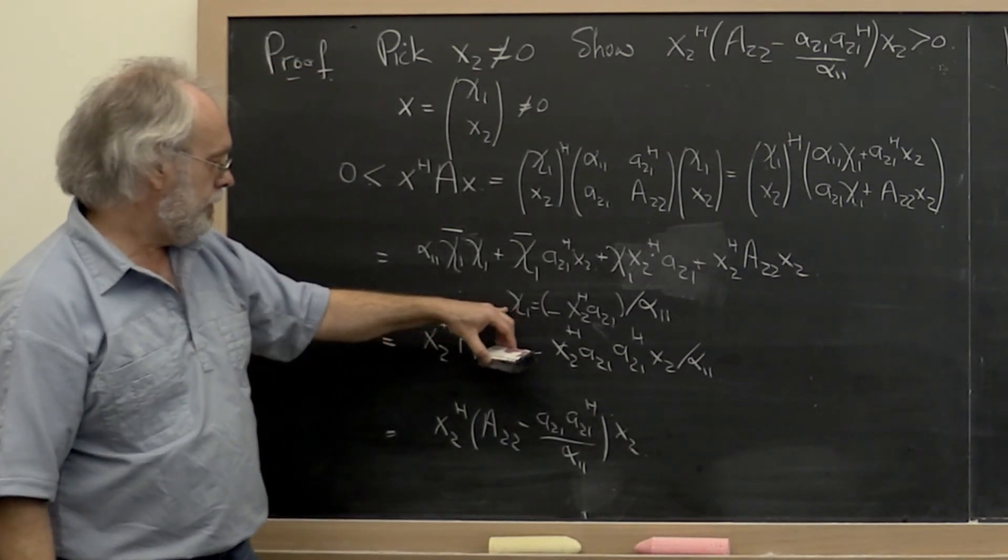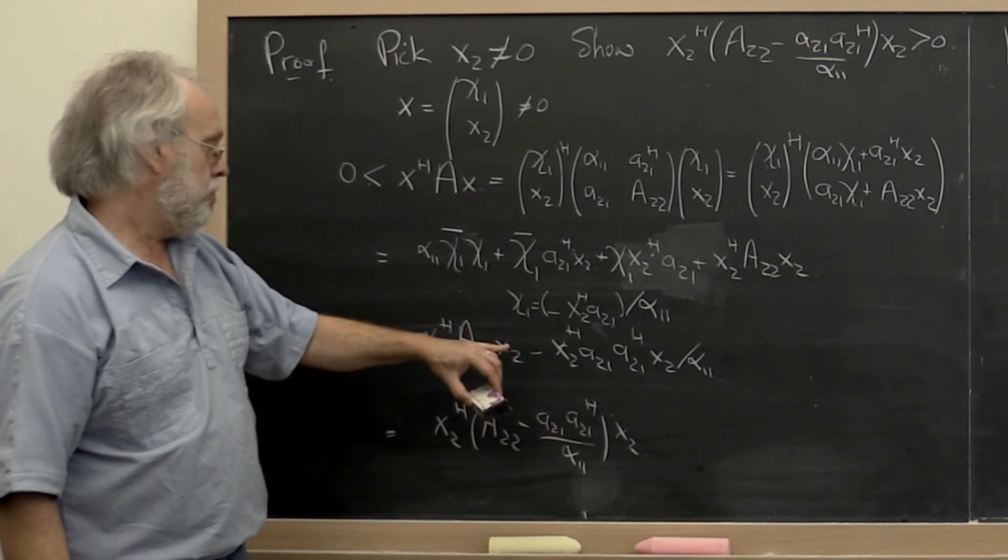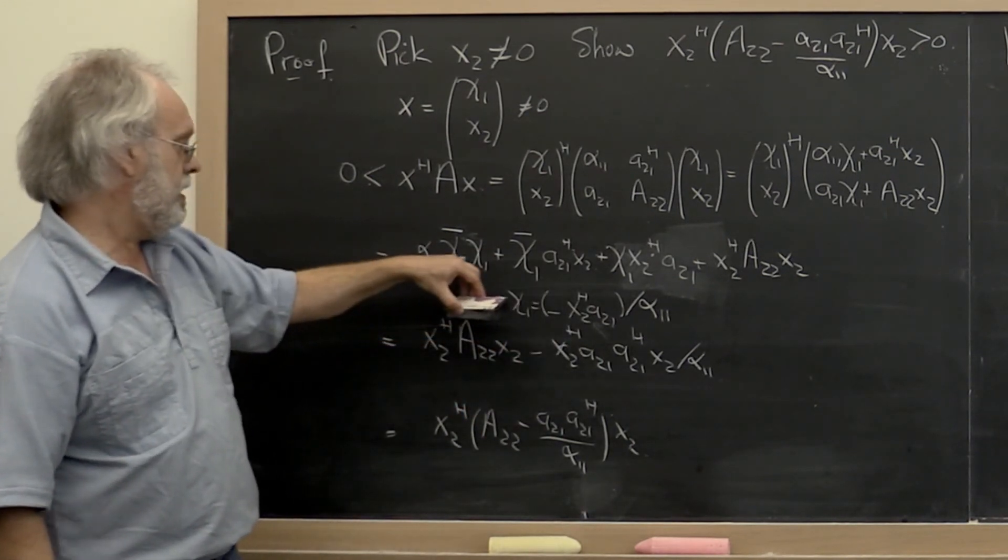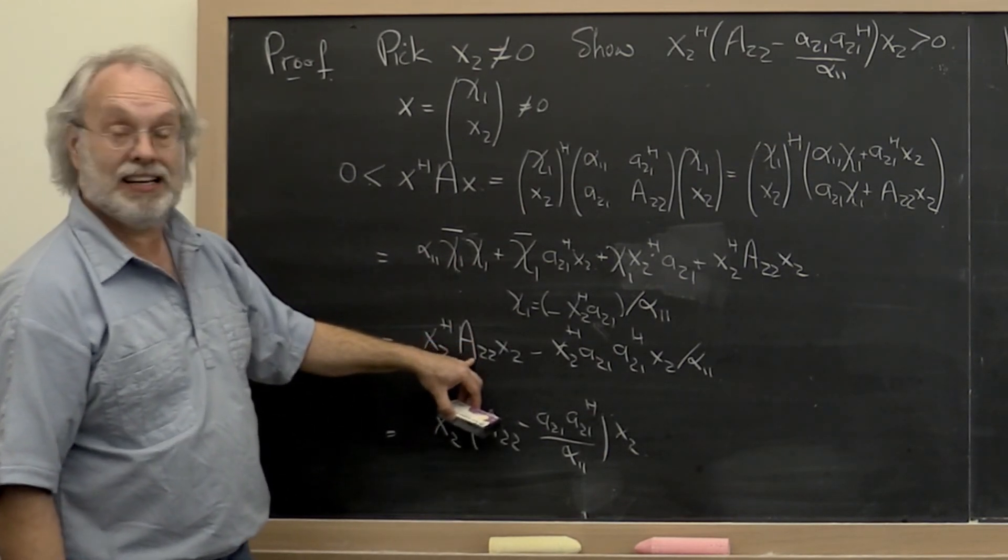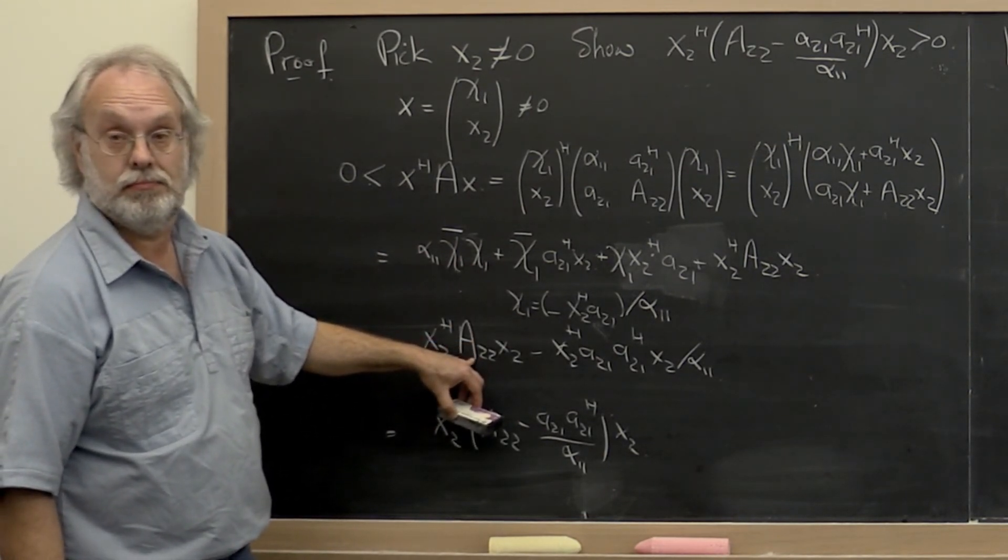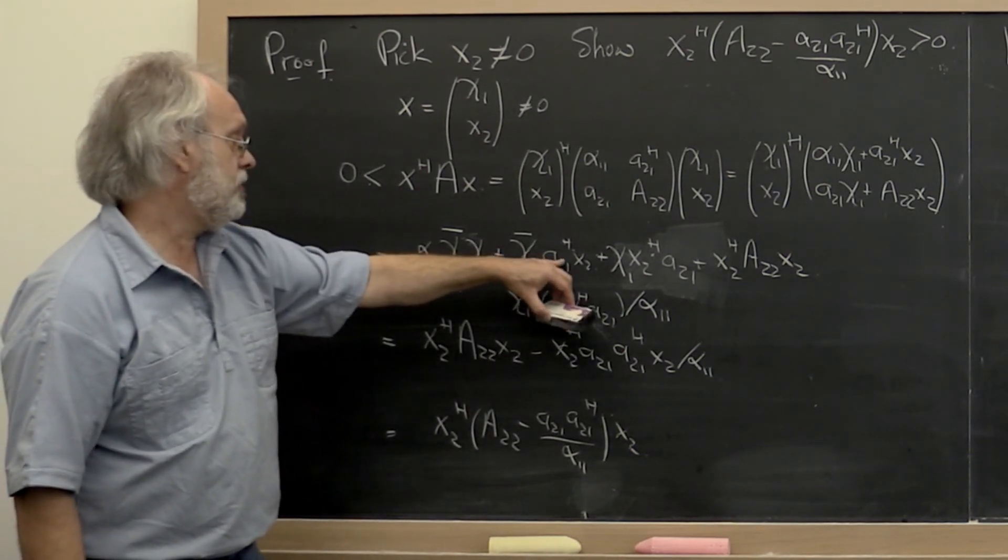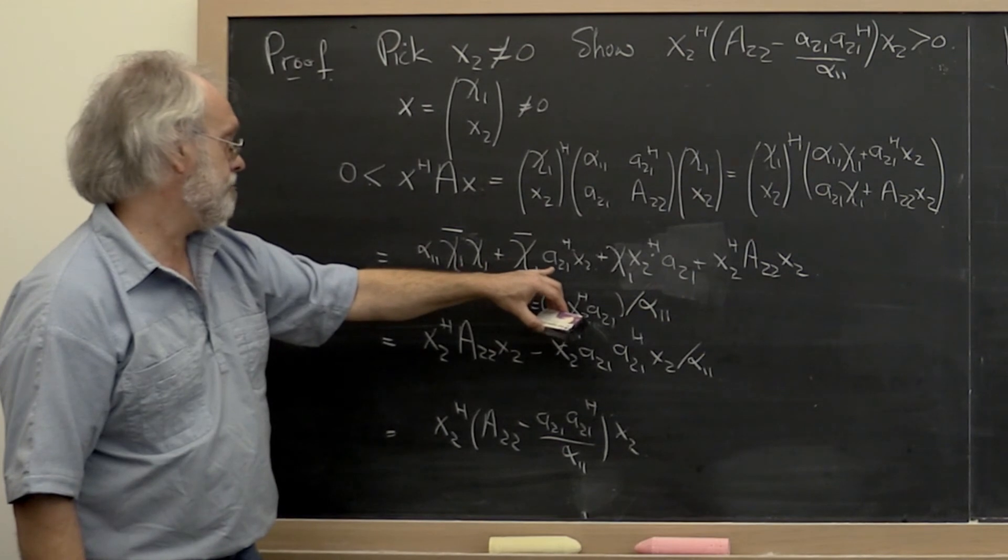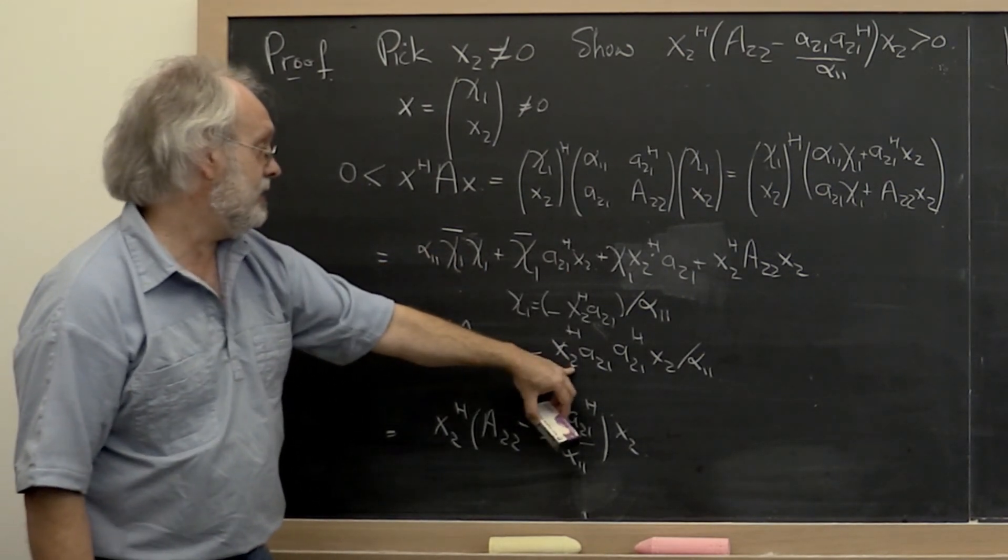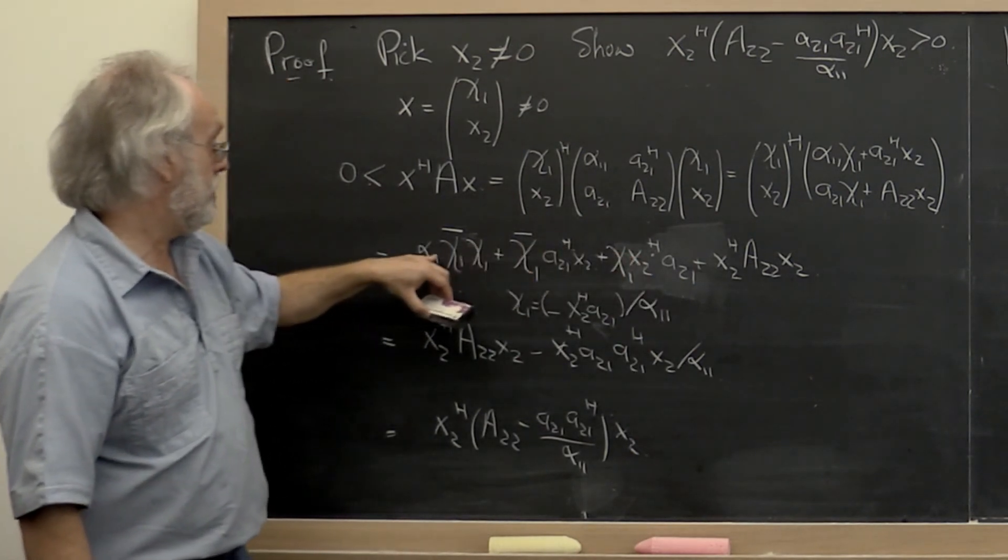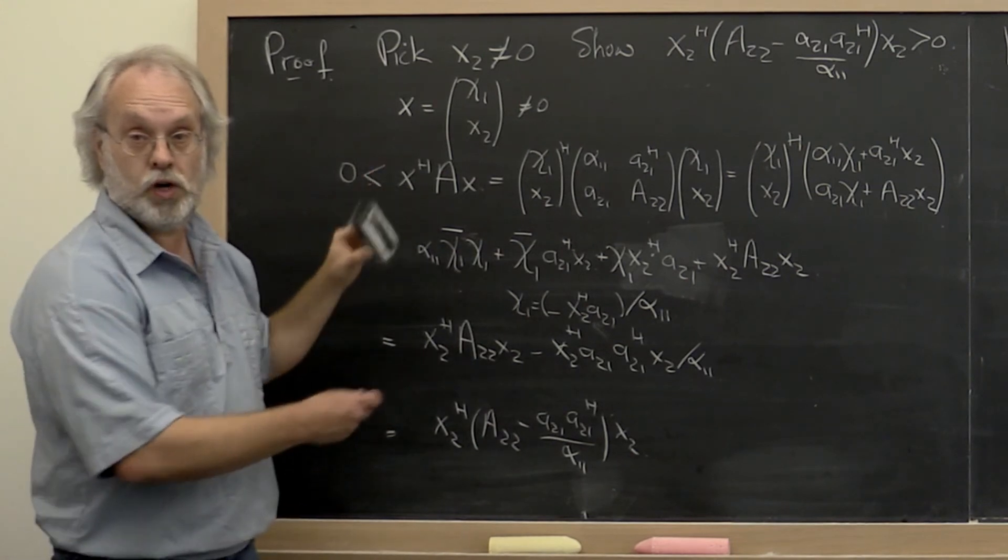And lo and behold, if you take that chi 1 and you plug it in everywhere up here, then you actually get exactly this. Because one of these terms ends up becoming exactly this and the other term ends up canceling this term right here. Work it out.